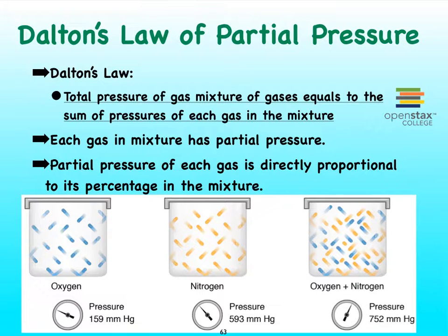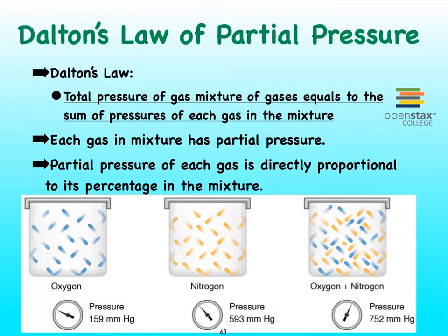Each one of these gases has a particular pressure. Oxygen has its own pressure, carbon dioxide has its own pressure, etc. Those individual pressures we call partial pressures — the partial pressure of oxygen, the partial pressure of carbon dioxide, and so on. When we're looking at a mixture of air like atmospheric air, its total pressure is the sum of the partial pressures of the gases that make up the mixture.